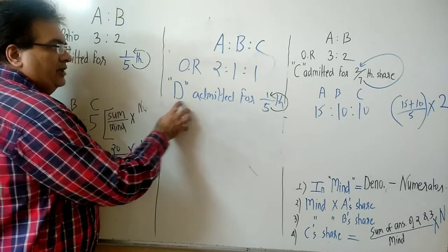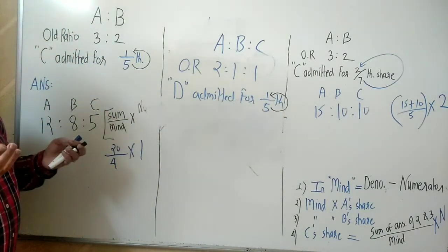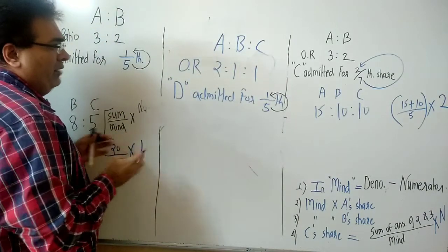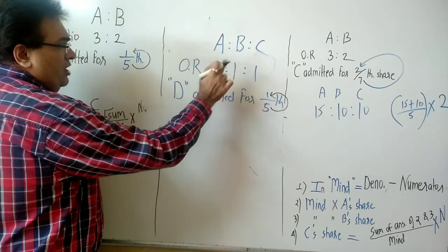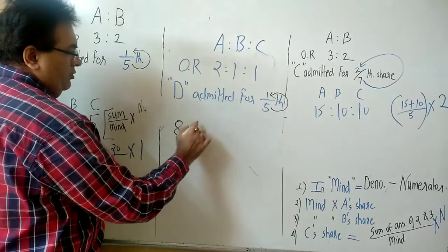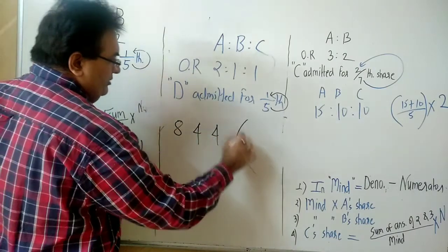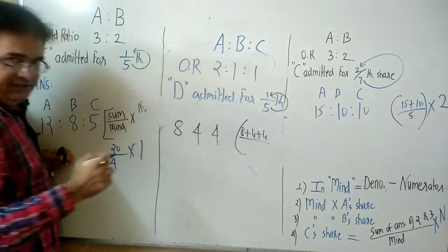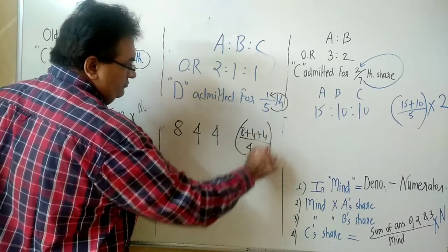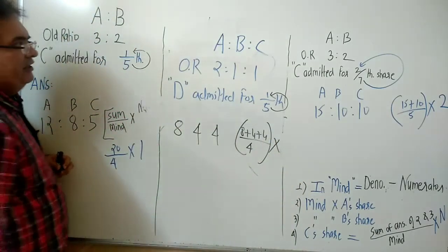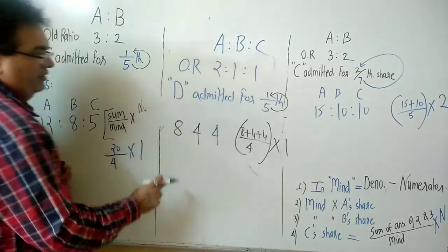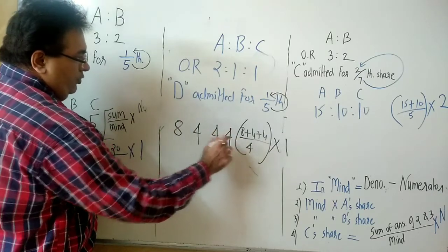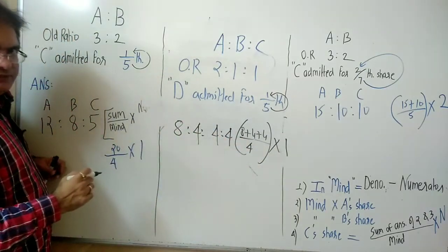Three old partners, and the fourth one D is admitted for one-fifth. Methodology remains the same. 5 minus 1 = 4 in your mind. 4 × 2 = 8 (A's share), 4 × 1 = 4 (B's share), 4 × 1 = 4 (C's share). For D: 8 + 4 + 4 = 16, divided by 4 = 4. Answer: 8:4:4:4.